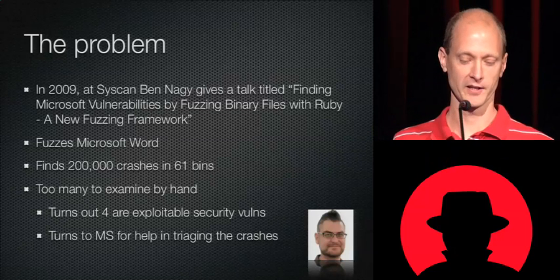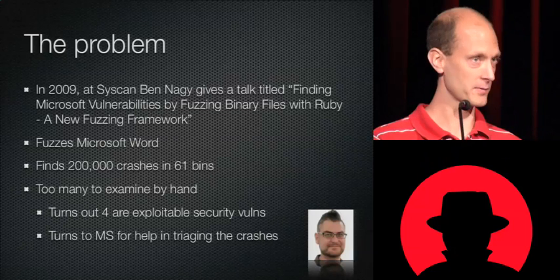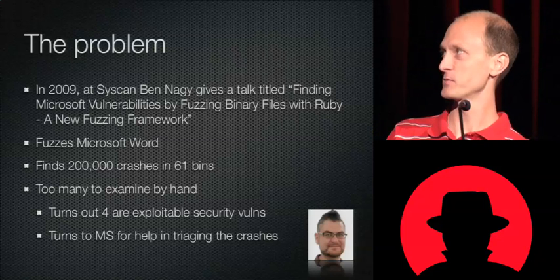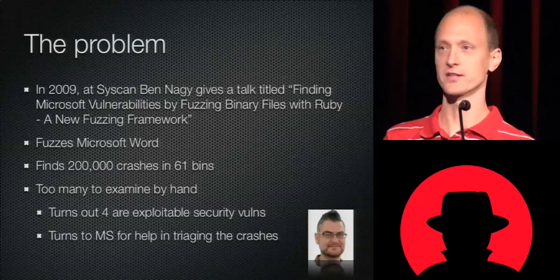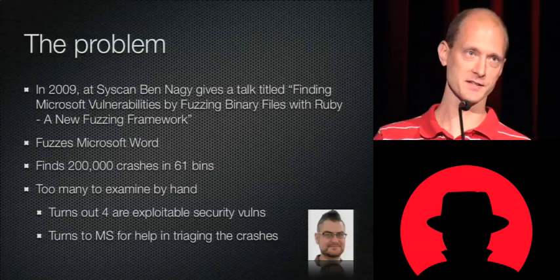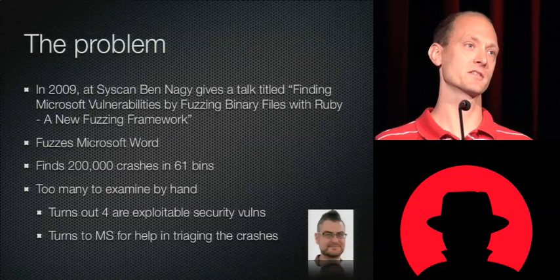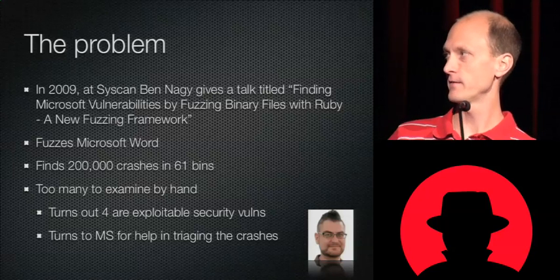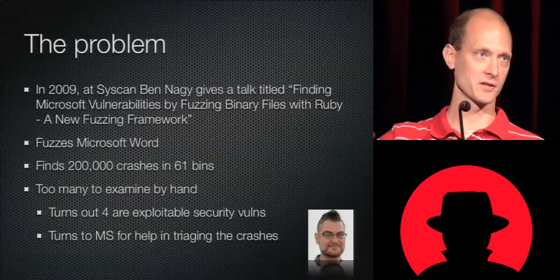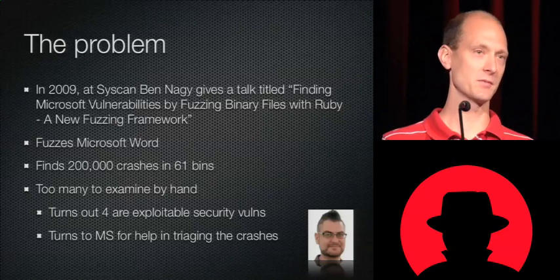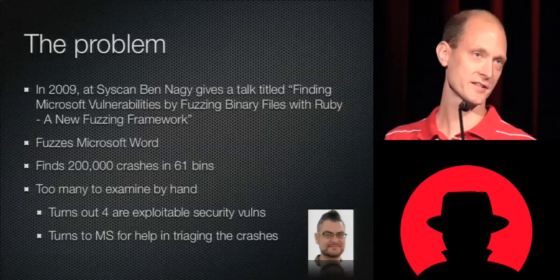The first person I know who really talked about this problem was Ben Nagy, who gave a talk about an hour ago — he's really the king of large-scale fuzzing out in the research world. In 2009 at SyScan, he was giving a talk about some fuzzing he did on Microsoft Word — .doc files. He found 200,000 crashes which were sorted into 61 bins, so 61 somewhat unique crashes. It was him and maybe a couple of guys and that was just too many crashes to analyze by hand.